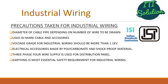Now let us learn the precautions taken for industrial wiring. Number one: diameter of cable pipe depends on number of wires to be drawn. Number two: use ISI — Indian Standards Institution — marked cable and accessories. Voltage grade for industrial wiring should be more than 1.1 kV. Electrical accessories should be made by polycarbonate and shockproof material. Three-phase four-wire supply is used for distribution panel. Earthing is the most essential safety requirement for industrial wiring.